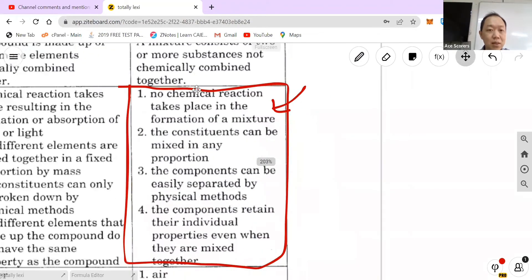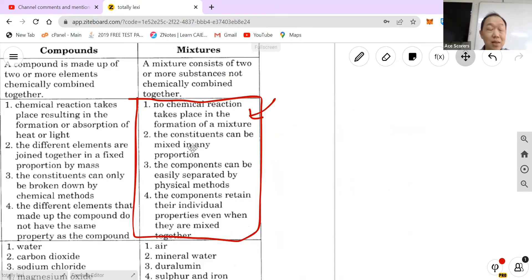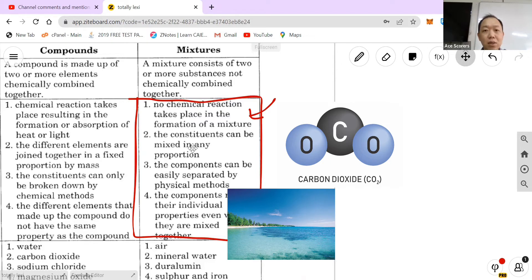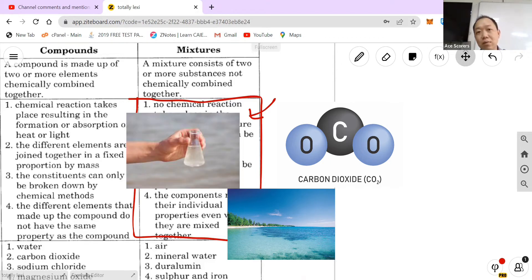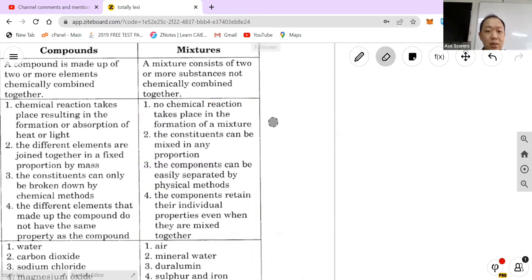First of all, no chemical reaction takes place in a mixture. The constituents can be mixed in any proportion. So for example, carbon dioxide which is a compound must be one carbon and two oxygen, whereas a mixture, for example seawater, it can be any amount of H2O and salt and all sorts of stuff inside. That's what they mean by the constituents can be mixed in any proportion.